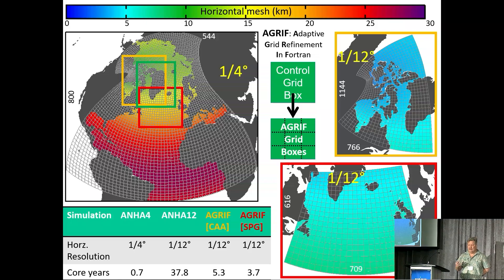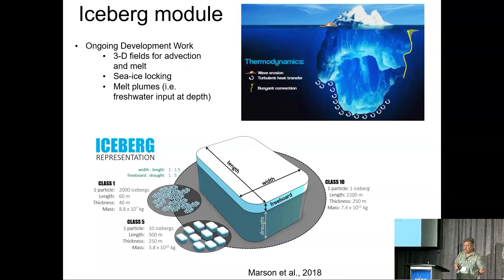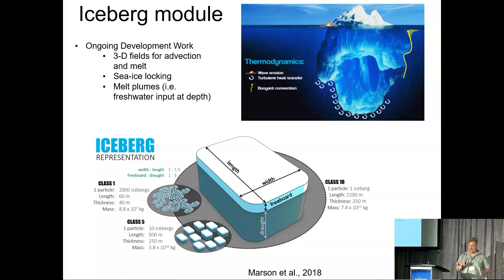We've done a lot of work with NEMO. They have the AGRIF tool, where you can do two-way nesting, and we can have nests for the subpolar gyre, Canadian Arctic, waters around Greenland, and I'll show some other nests as I move through this presentation. Obviously, the reason is computational — you only get the higher resolution in a smaller region. We also have a Lagrangian iceberg model embedded in the system. Some of our work has shown that freshwater coming off the Greenland ice cap follows different routes if it's released as liquid versus solid, and with icebergs, you get more exchange of freshwater into the interior of, for example, the Labrador Sea Gyre.